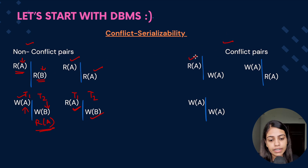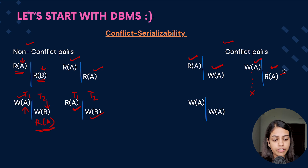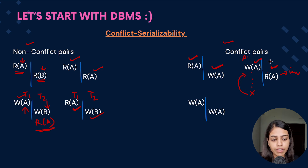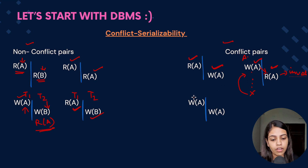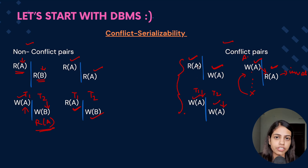For conflict pairs: if we are reading data item A and then writing to that same data item A, there is a read-write conflict. For write-read: if we are writing to data item A and then reading it, consider if that transaction fails — it will abort and roll back to its original value, but we have already read the updated value, so we have an invalid value. That is why it is a conflict pair. Write-write on the same data item is also a conflict pair.